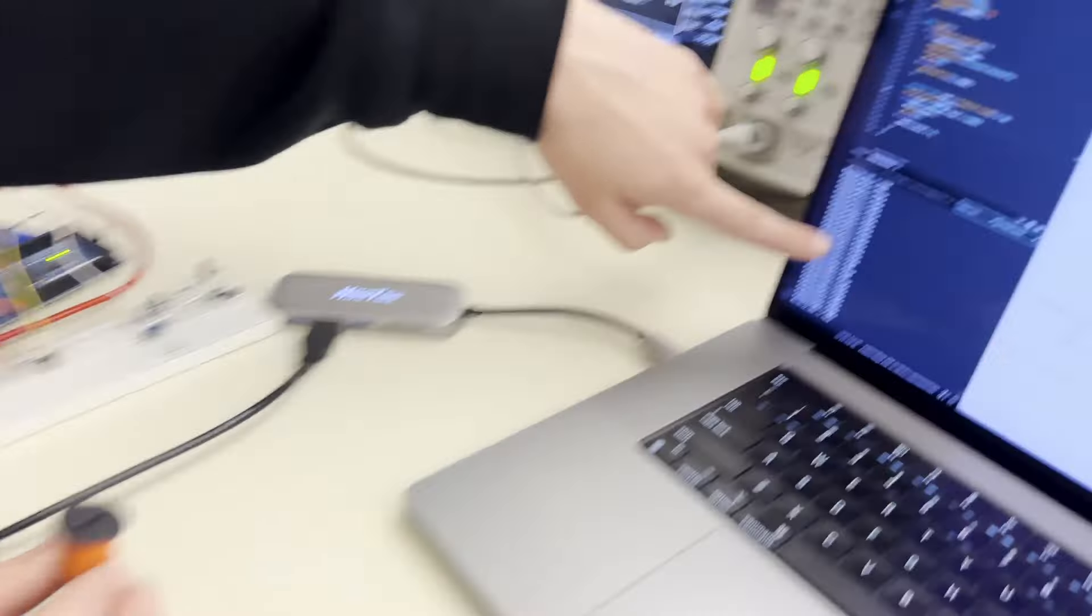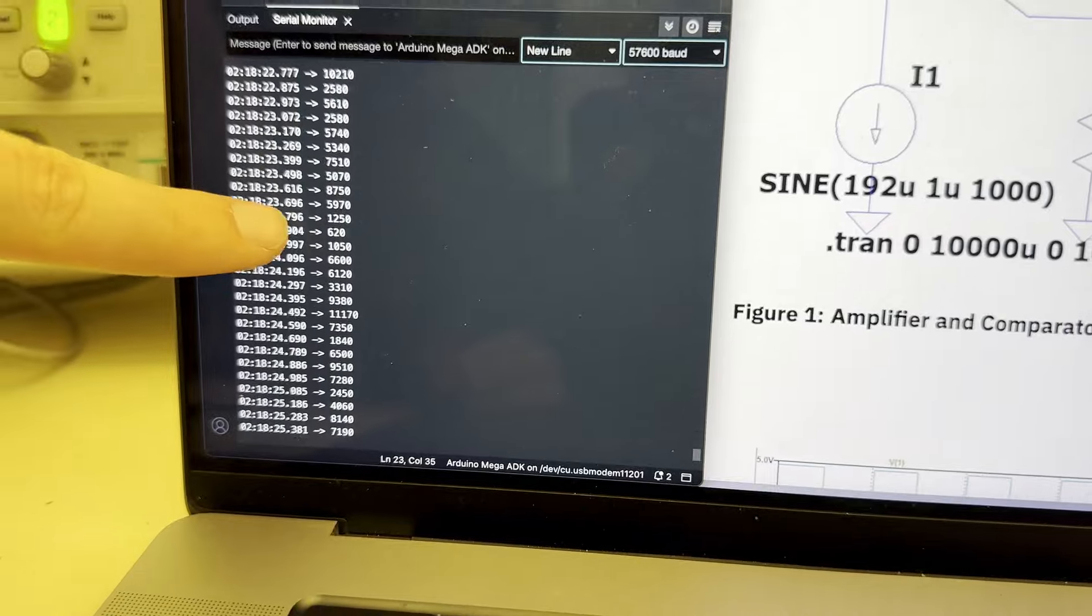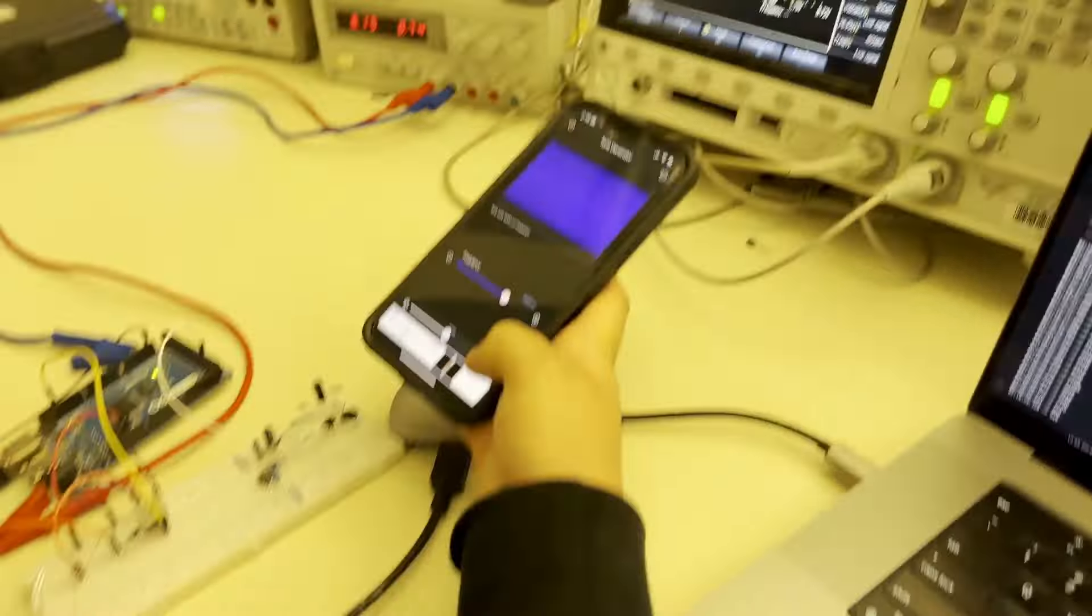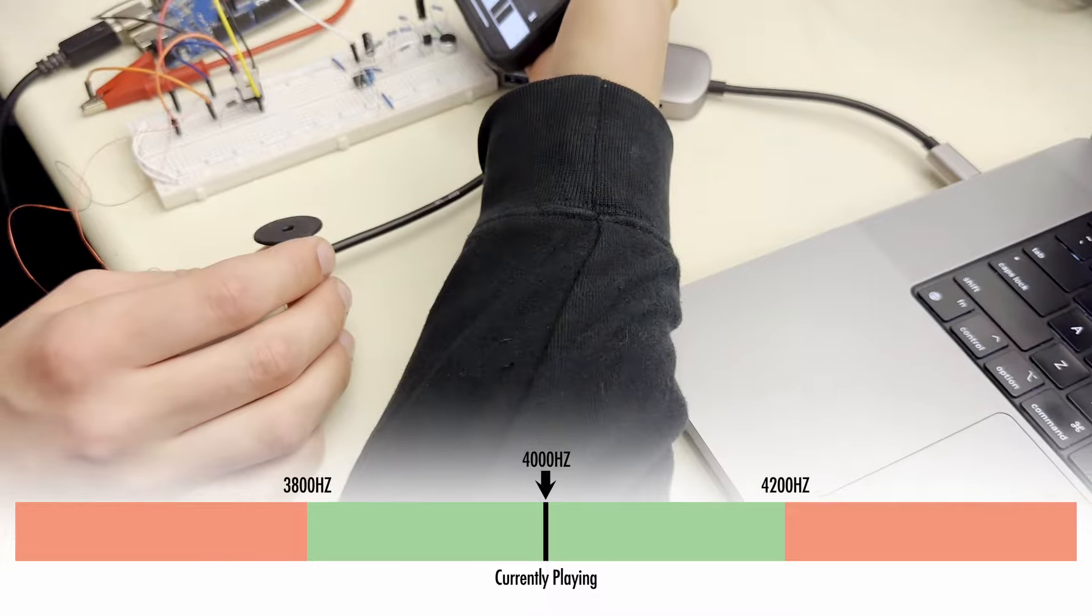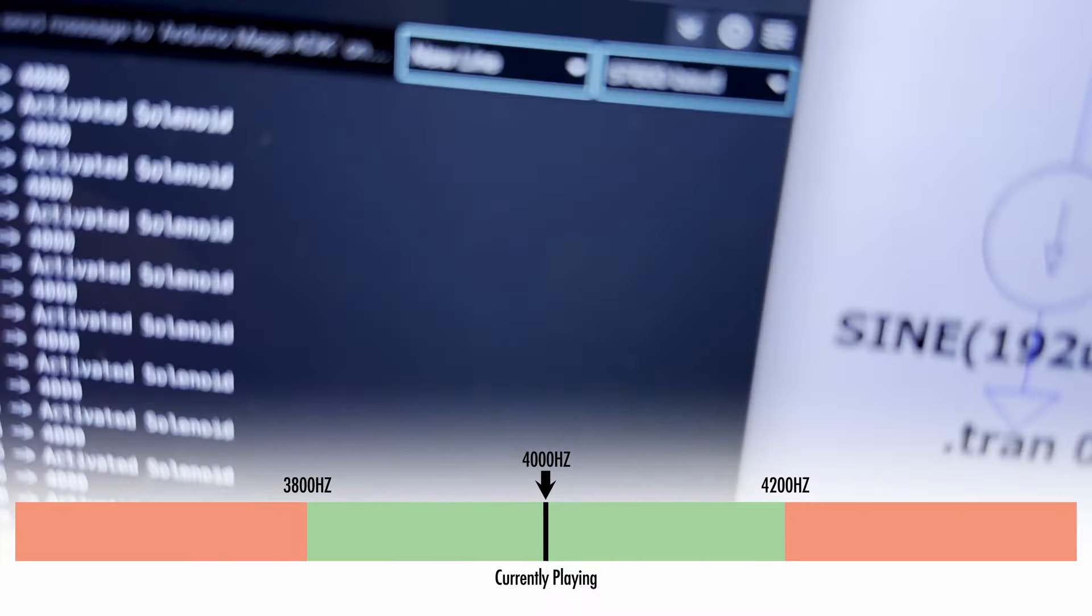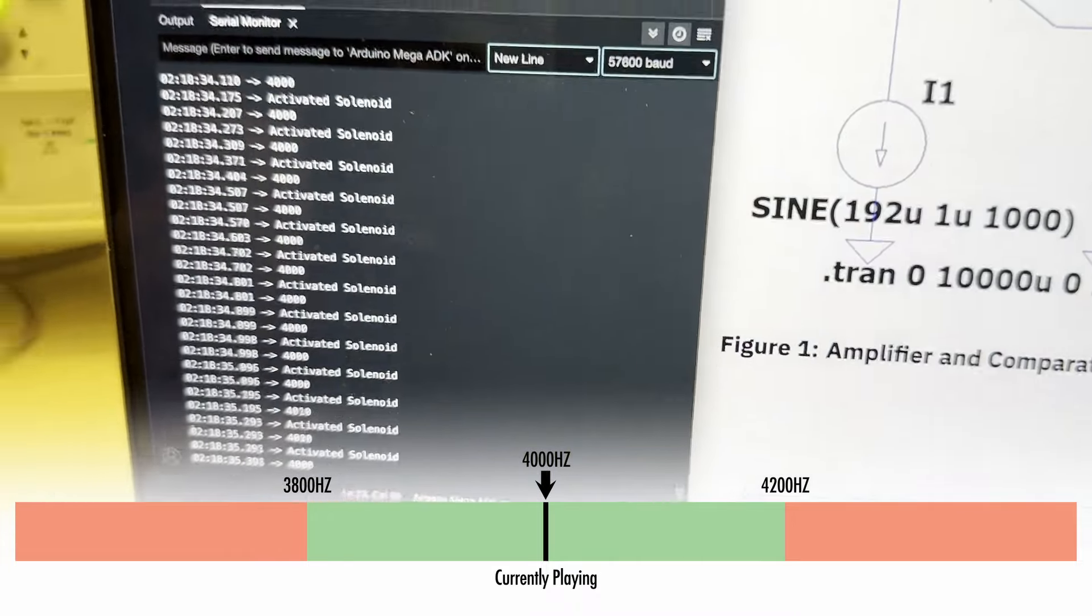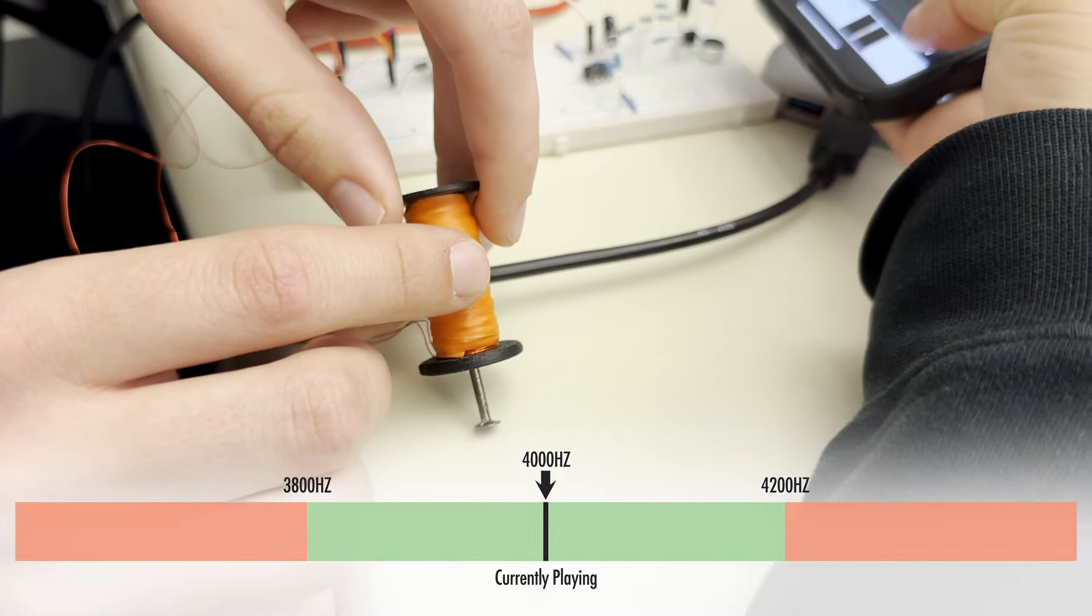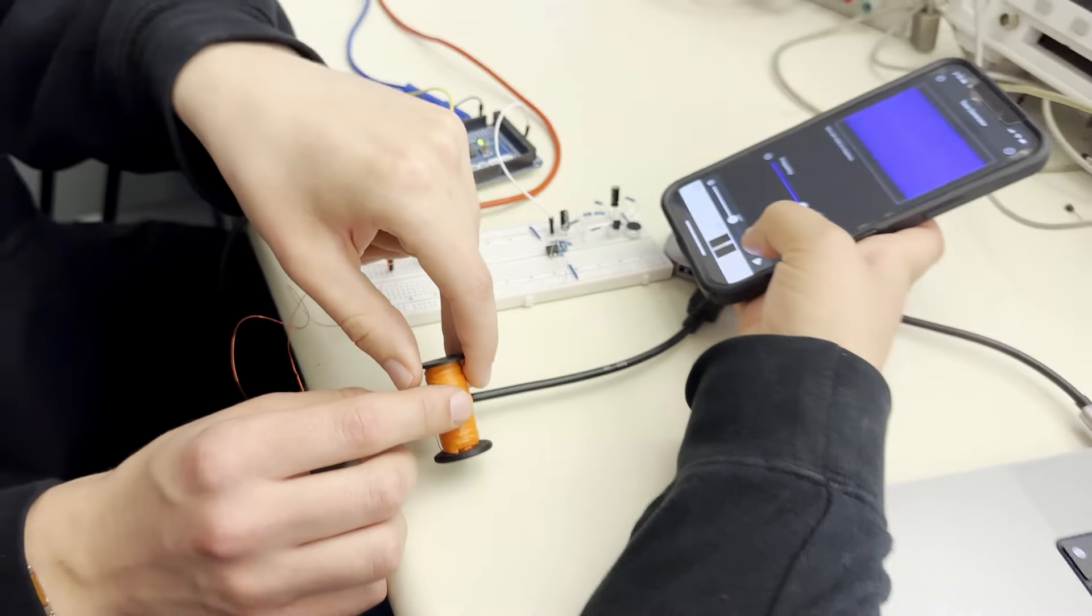Over here you can see the readout of the frequencies that we're getting in real time. And then if we play a frequency that's in our range, so 4000 Hz, you'll see that it activated the solenoid. And if we look here, the nail is no longer being held. And if we turn off the signal, that nail gets sucked back up.